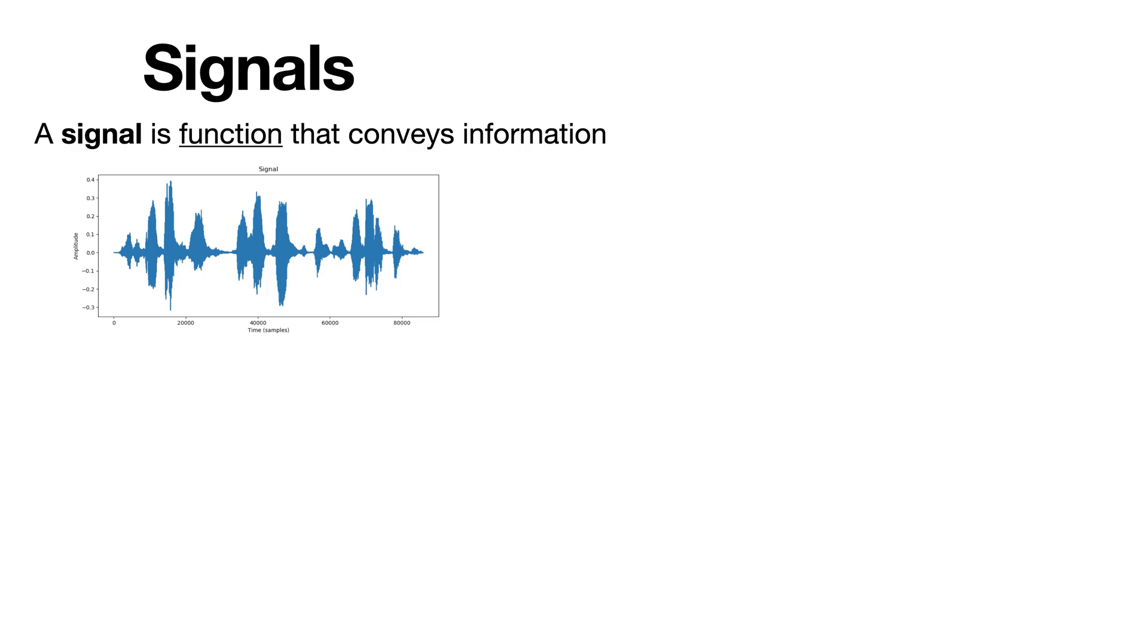A signal is just a function that conveys some sort of information, and here information is broadly and generally defined to make our analysis super general. While this notion of a signal is so broad it may seem useless, the fact that it is so general is actually helpful because it means any of our reasoning about signals applies to as many possible signals as possible.